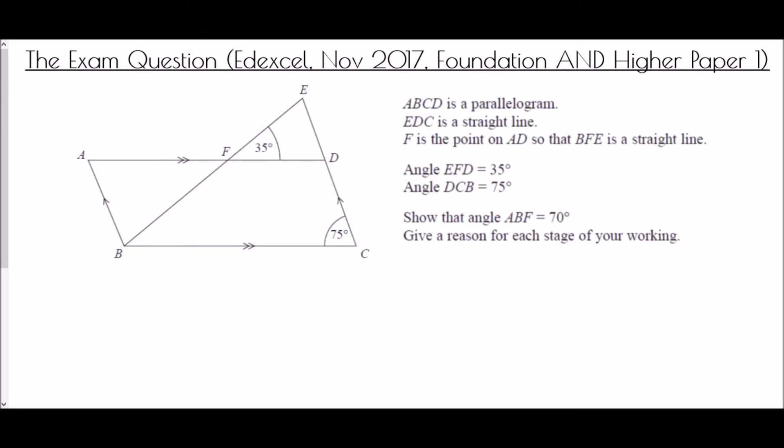Finally, we have an exam question from the Edexcel paper in November 2017, which appeared on both the foundation and higher paper. We're given that ABCD is a parallelogram, EDC is a straight line, and F is a point on AD such that BFE is a straight line. Angle EFD equals 35 degrees, angle DCB equals 75 degrees. We need to show that angle ABF equals 70 degrees, giving a reason for each stage.